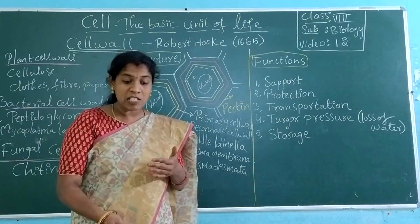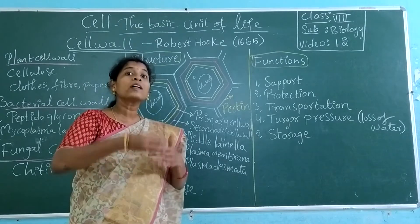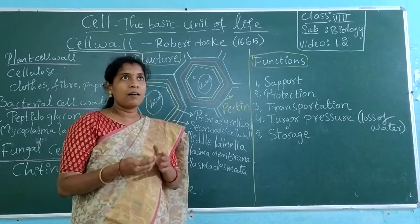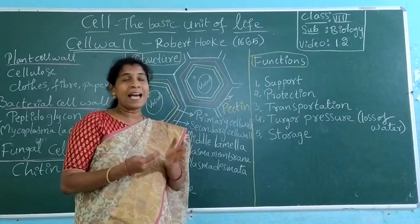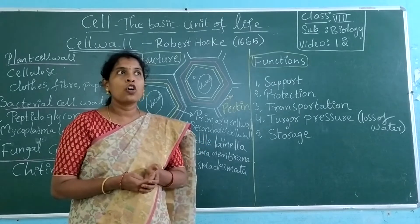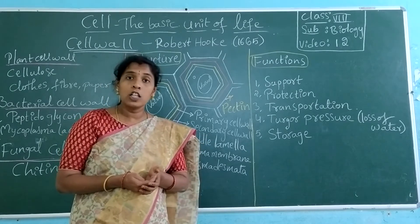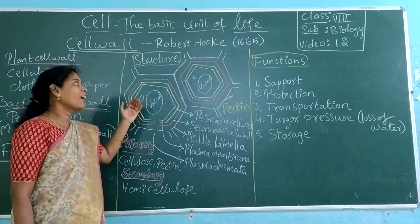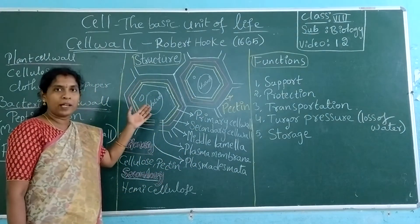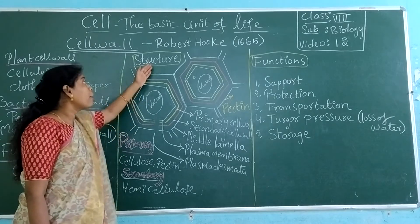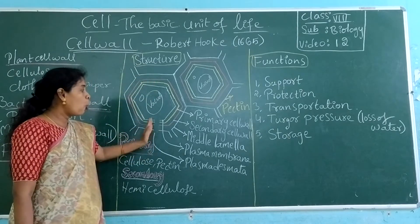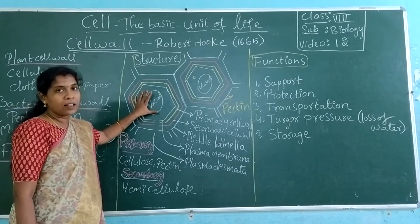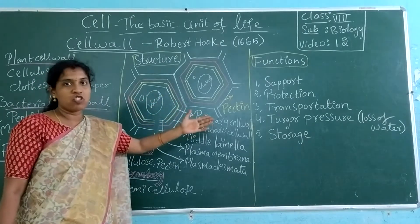From the external surface, water should go inside the cell. And remember gaseous exchange — oxygen and carbon dioxide should also pass through the cell wall via the plasmodesmata. From these gaps, the material goes inside. By this way, the cell wall helps in transportation.